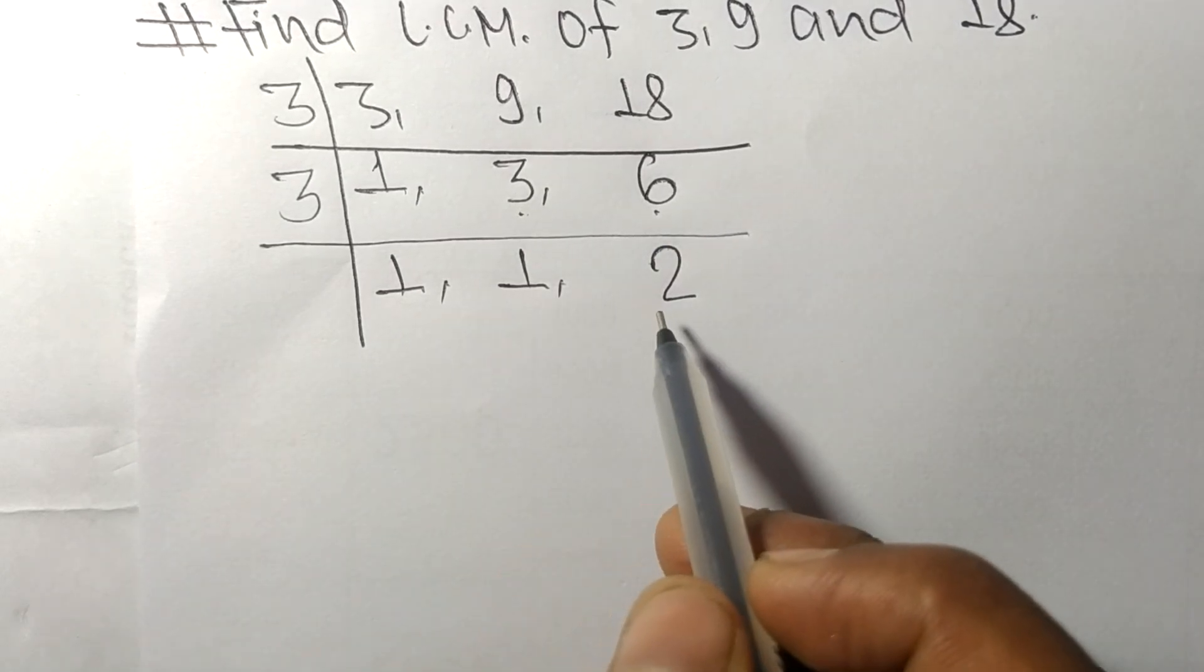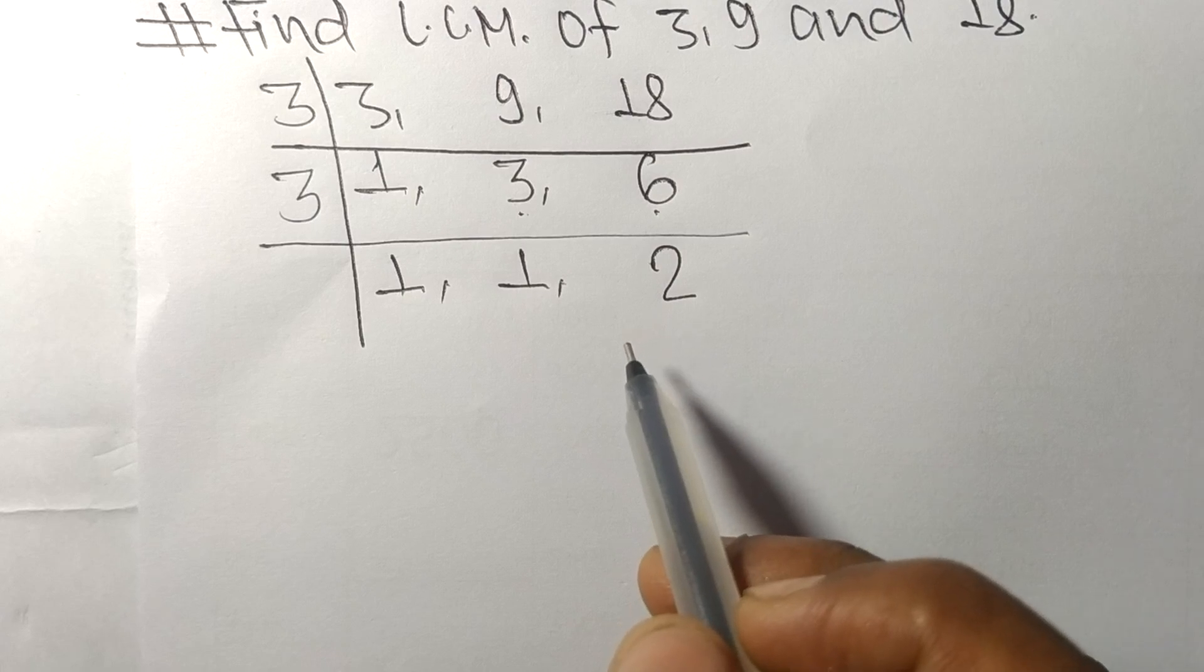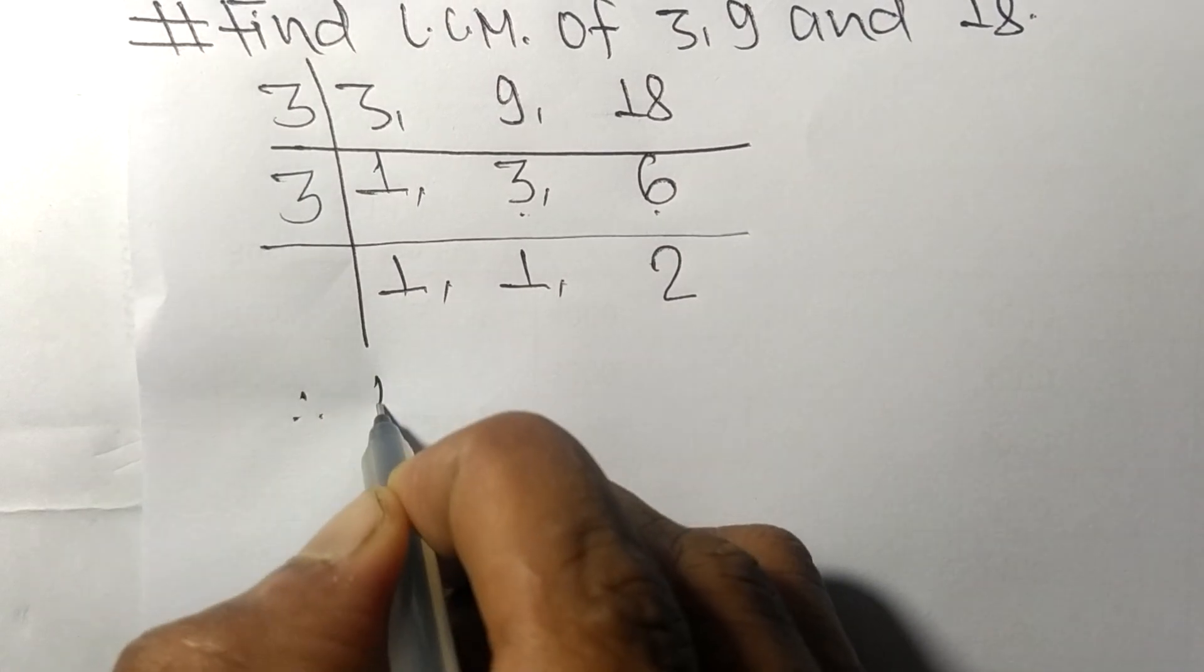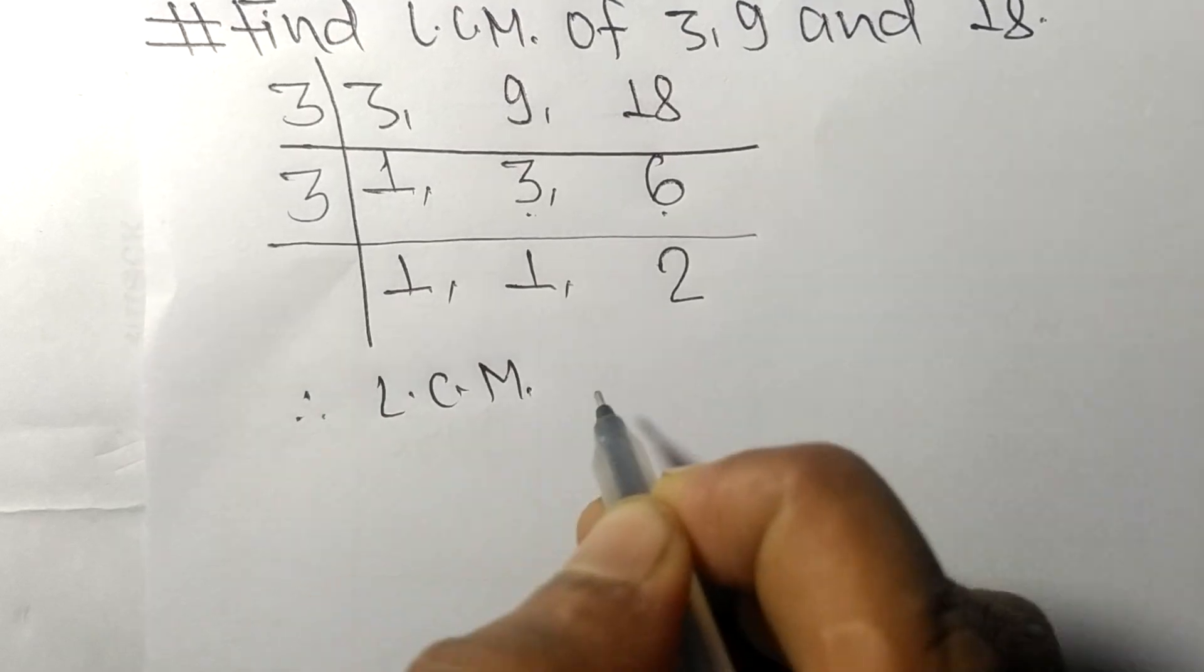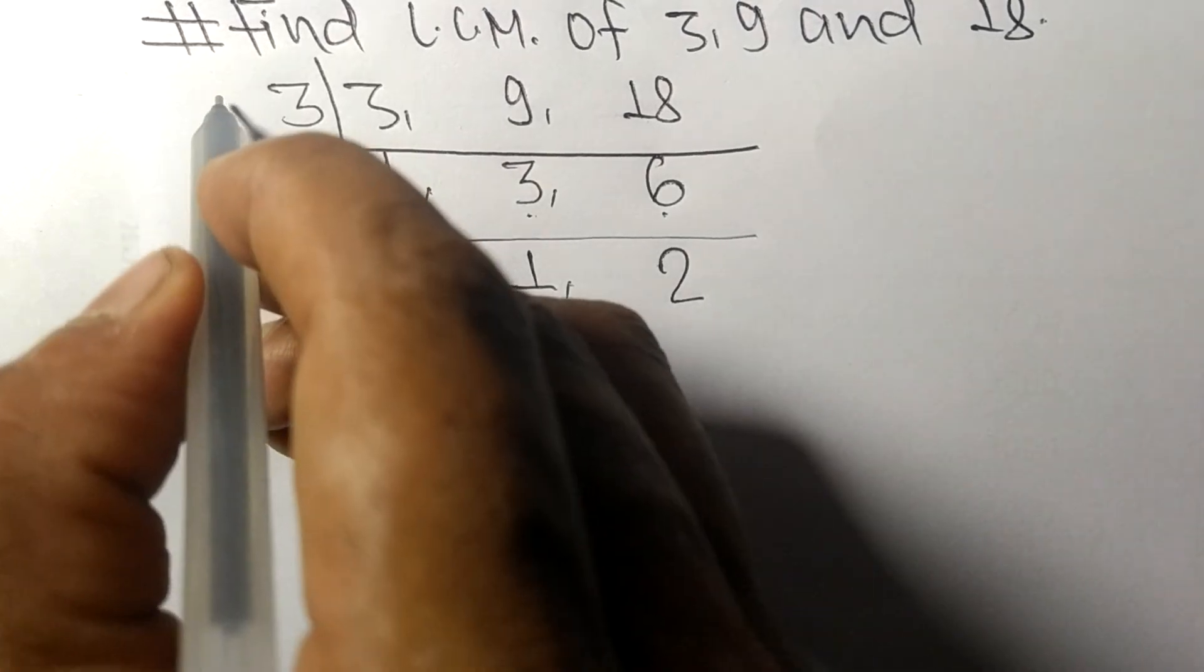So now we got 1, 1, and 2, which are not divisible by the same number. Therefore, the LCM is equal to: